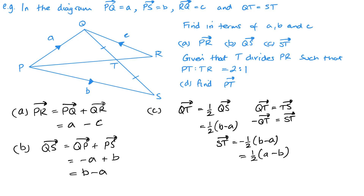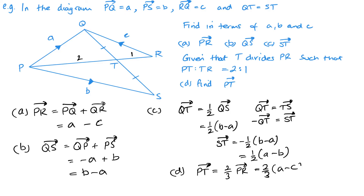For part d, we want to find PT. We're told the ratio is two to one, therefore PT must be two thirds of PR. So PT equals two thirds of (A minus C). And that's it done.